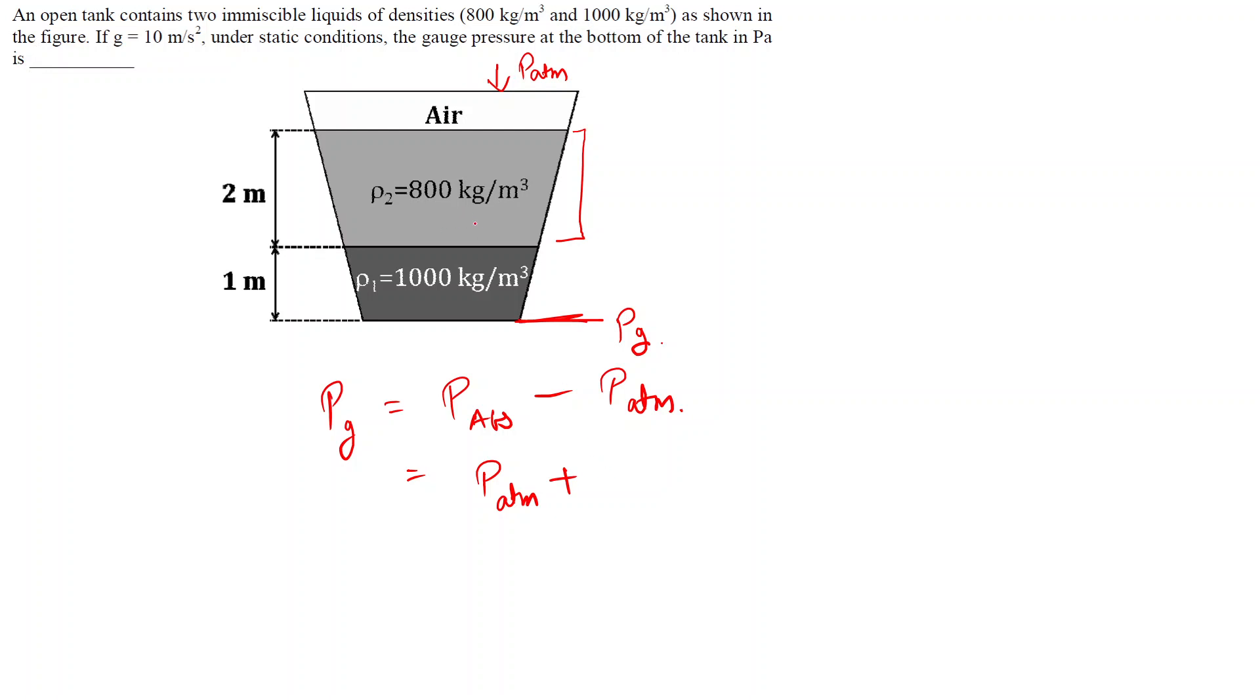plus the pressure due to this fluid ρ₂gh, and the height of this fluid is filled for two meters, so we can just write it as 2 meters. Plus similarly for the second fluid it will become ρ₁g and height is 1 meter minus again P_atm.